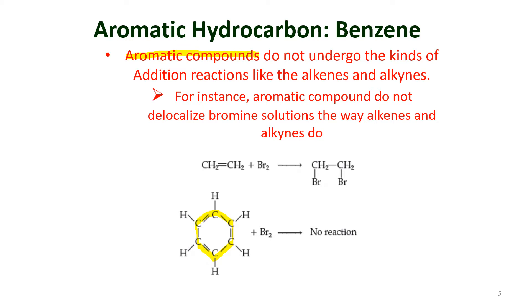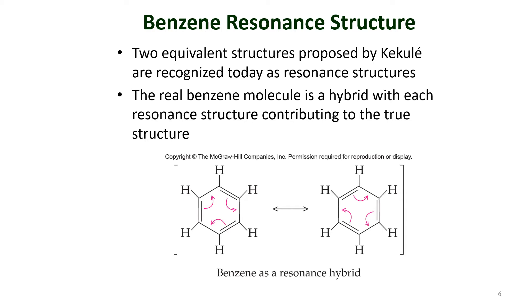Aromatic compounds do not undergo the usual addition reactions like alkenes and alkynes. In the previous lectures we saw addition reactions — for example, an alkene joining with bromine where the double bond is broken and each carbon gets one bromine atom. But if we try to add bromine to the benzene molecule or an aromatic hydrocarbon, no reaction will occur.